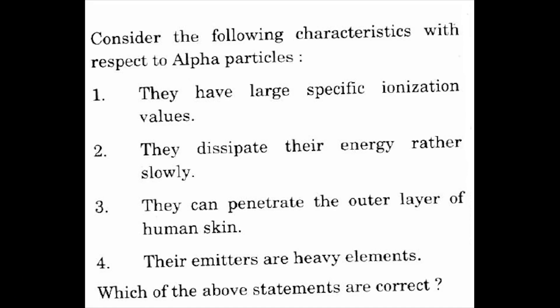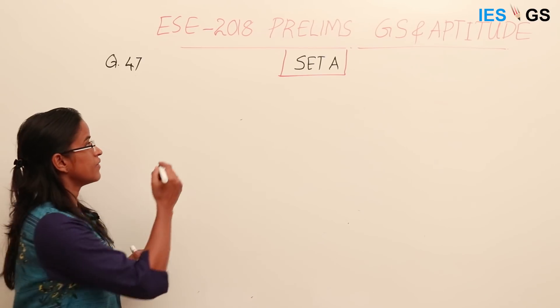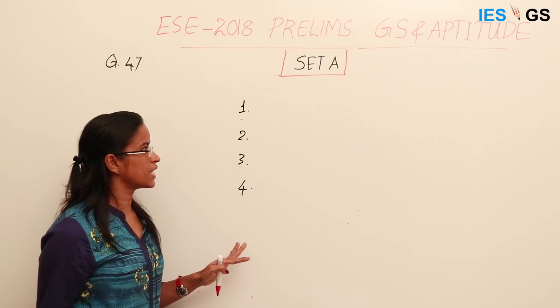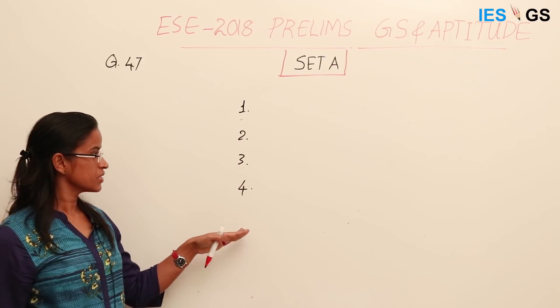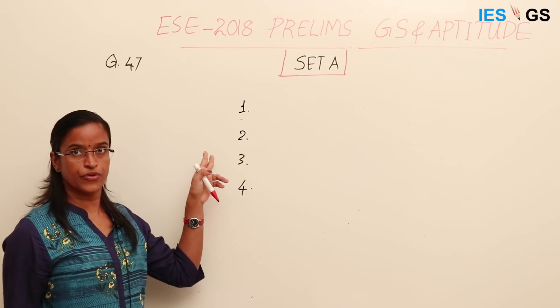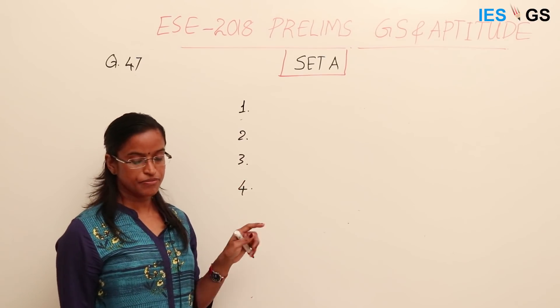Question 47: Consider the following characteristics with respect to alpha particles. First, they have large specific ionization values. Second, they dissipate their energy rather slowly. Third, they can penetrate the outer layer of the human skin. Fourth, they are emitted by heavy elements. Which of the above statements are correct? From the options, it is clear that only 2 statements are correct.